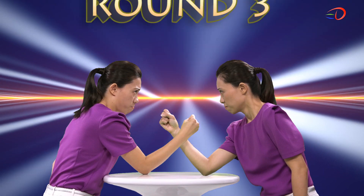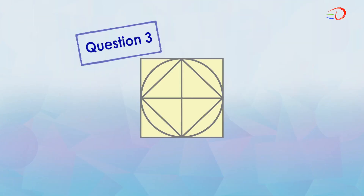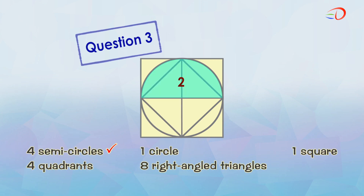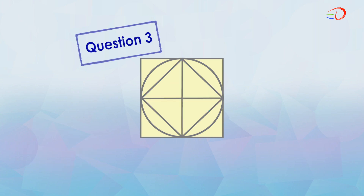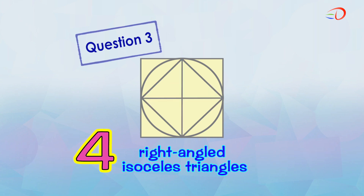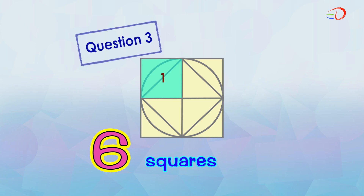What are the basic shapes we can find? These are shapes which we have identified in challenge two. This time, there are additional four small right-angled isosceles triangles at the corners: one, two, three, and four. There are also six small squares: one, two, three, four, five, and six.